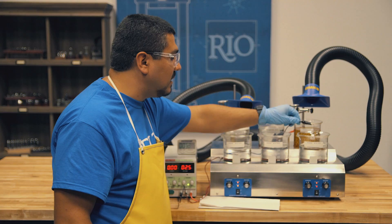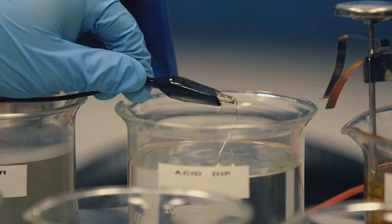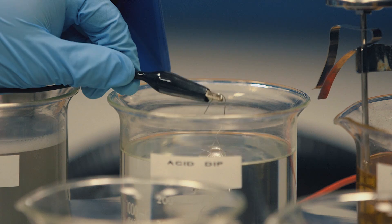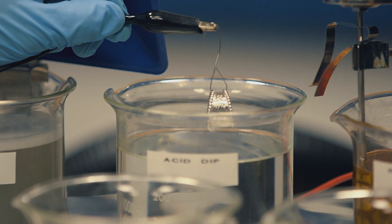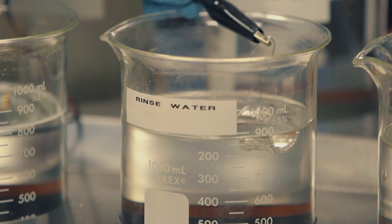We will go back into our acid dip neutralizer for 30 seconds. This will neutralize any excess plating solution. And now our final rinse to rinse off any excess acid dip.